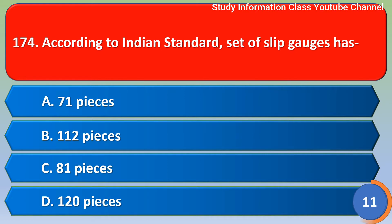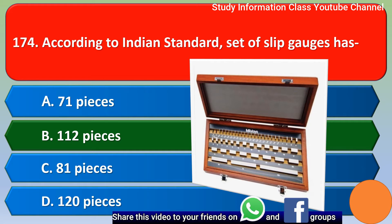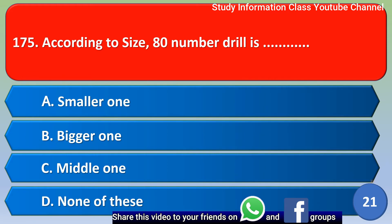According to Indian standard, the set of slip gauges — for this question, the correct answer is option B: 112 pieces. Option B is the correct answer.